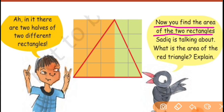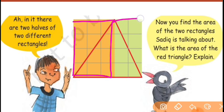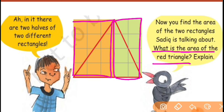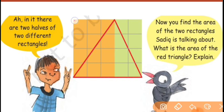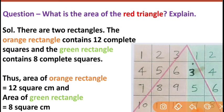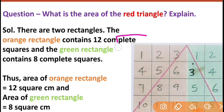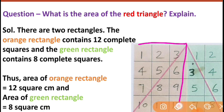Sadiq is talking about the two rectangles — the orange rectangle and the green rectangle. You will find the area of both. Then the question is: what is the area of the red triangle? Before that, find the area of both rectangles, then take half of each and add them — that will give the area of the triangle. Let's see how to get the answer.